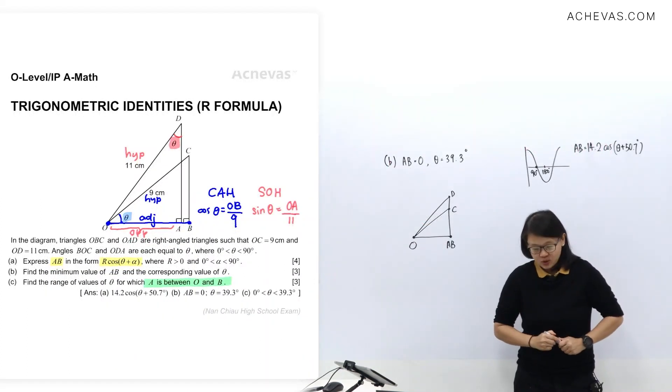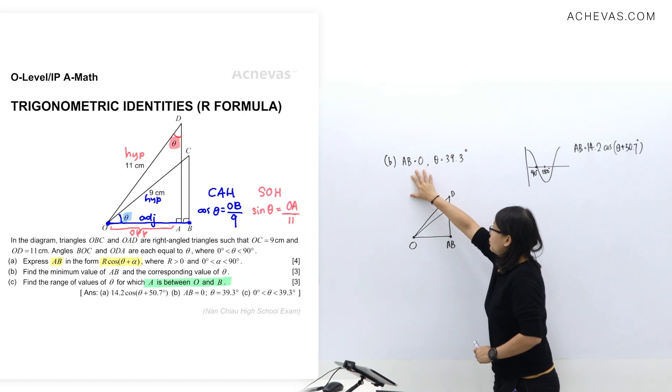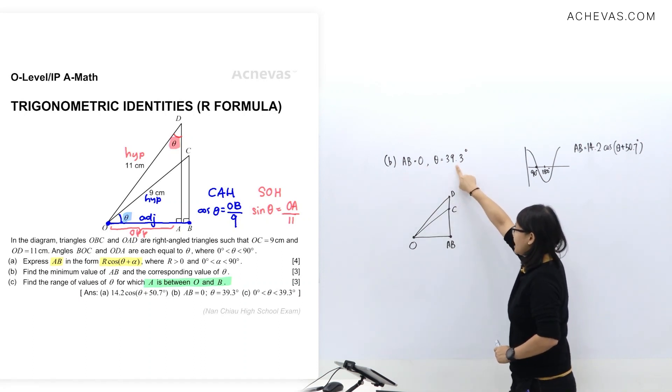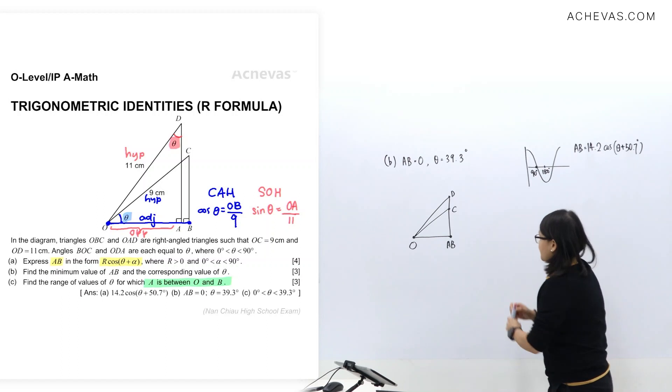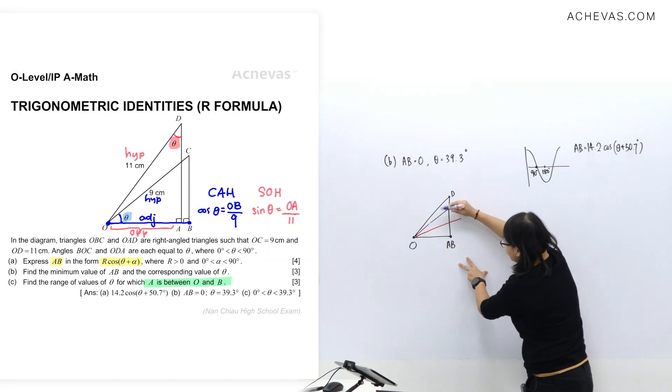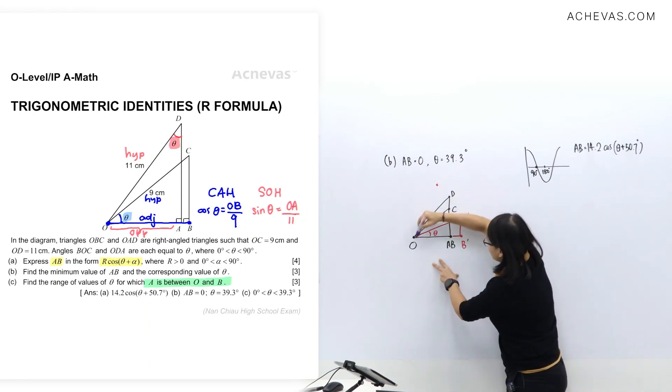Now let's take a look at an interesting part C question here. Find the range of values of theta for which A is between O and B. Now I'm going to explain what you have here in part B, where you do AB equals 0 and theta equals to 39.3 degrees, is that A and B will be an overlapping dot over here. So to get A to be between O and B, that's what's going to happen is that this one will push the triangle this way to maintain the length here as 9. You'll get something like this one here, where point B comes here and C here. So this is the new theta value and for point D, you will push it out here.